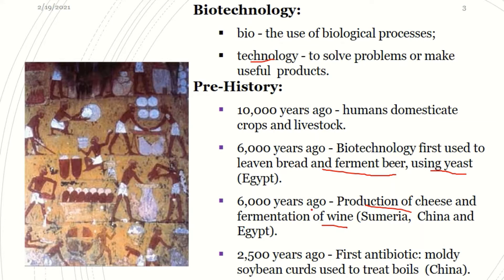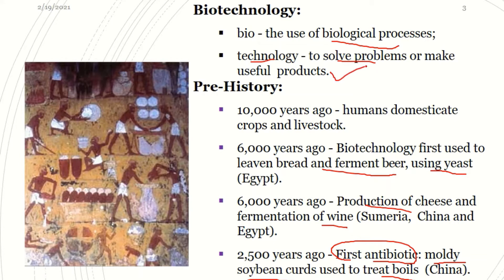We have also had production of cheese and fermentation of wine in China, Sumeria, and Egypt — very many years ago. And 2,500 years ago, the very first antibiotic was made in China from moldy soybean curds, and this was used to treat boils. So even before we could define biotechnology, people were using biological processes to solve problems of hunger, disease, and many others.